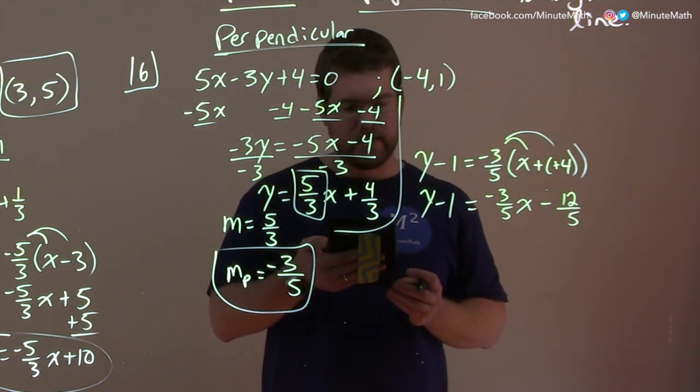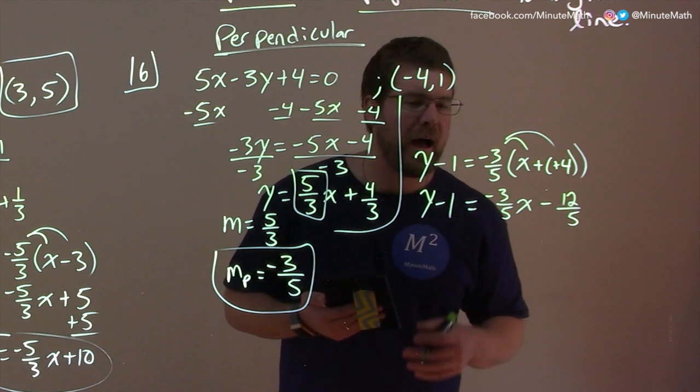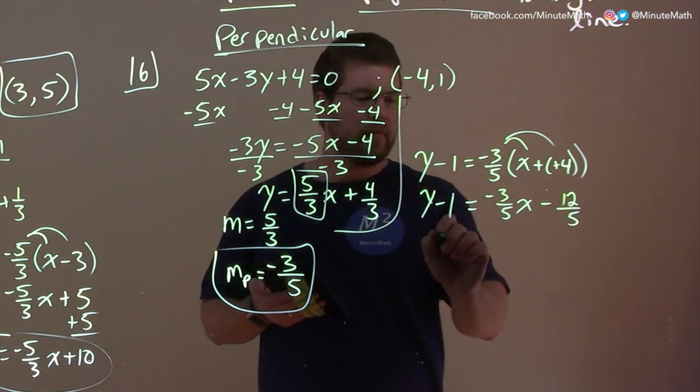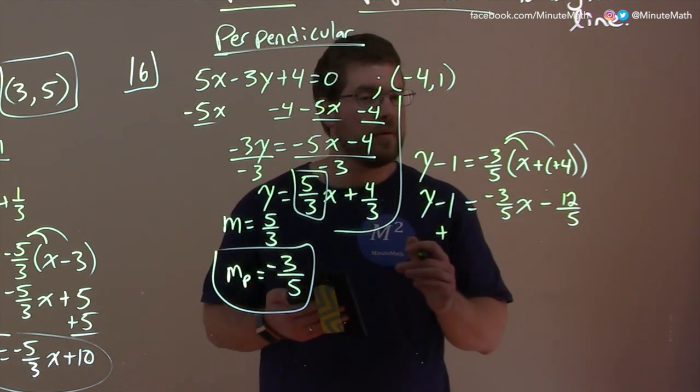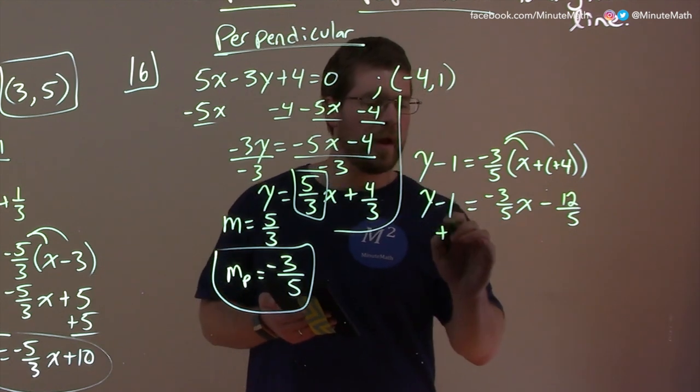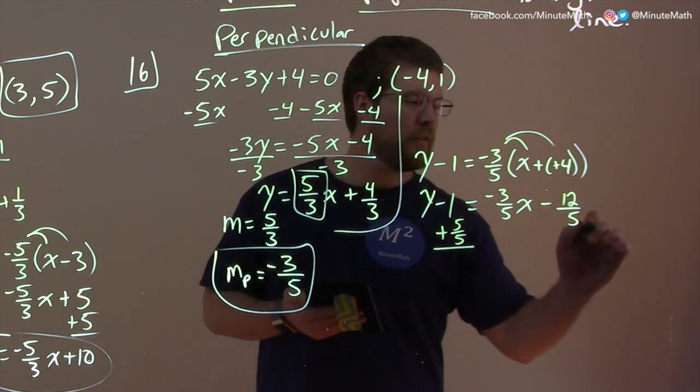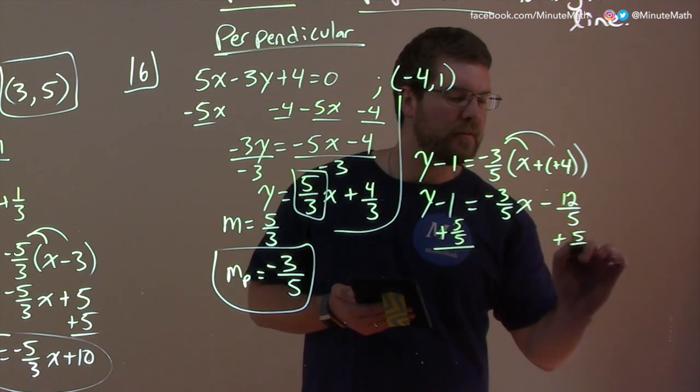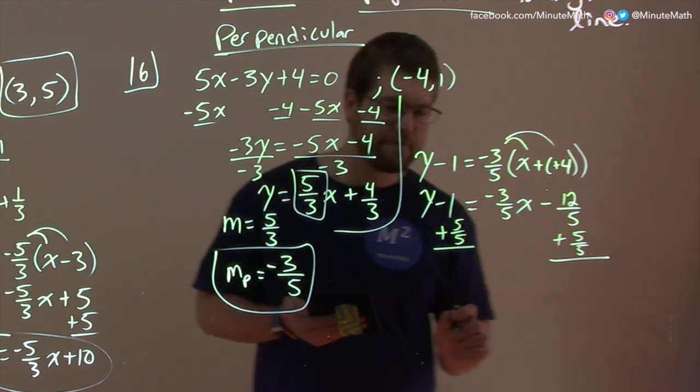All right. A lot of steps here. Well, how can I go from there? I want to get y by itself. So I'm going to add a 1 to both sides, which trick thing here, 1 is the same thing as 5 fifths. So if I add a 5 fifths here, it's another way of saying 1.